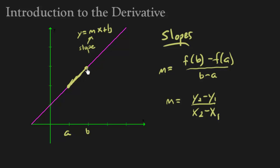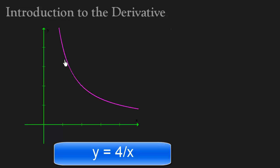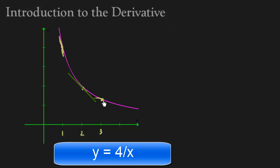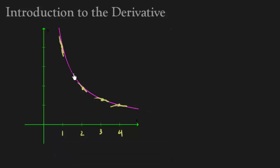Finding the slope on a straight line is pretty simple because the slope anywhere on that line is going to be the same. Now let's take a look at a more complicated graph. If I ask you to find the slope on this graph, notice that the slopes at any point are going to be different. This is the slope at point 1, but the slope at point 2 has a different, steeper line. At point 3 it's different again, and at point 4 it's slightly different. The slope changes at any point on this graph.